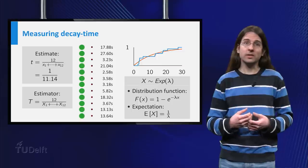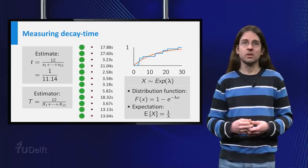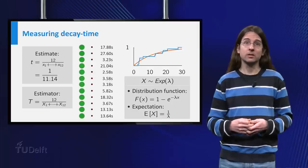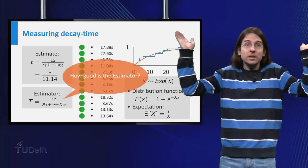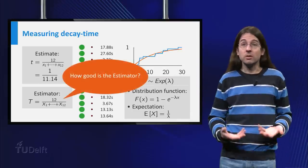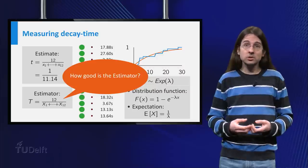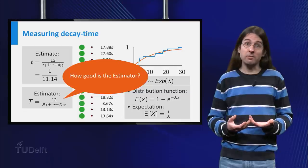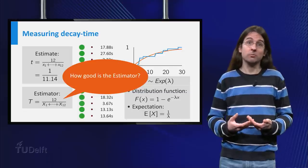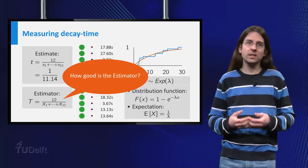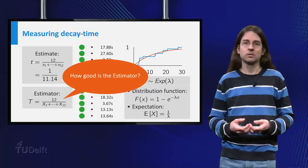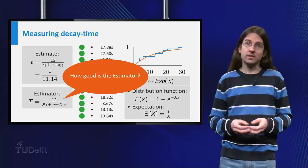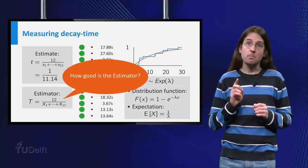Let us go back to the example of the radioactive atoms. One over the average is an estimator for the value of lambda. But is it a good estimator? To answer this question, we first need to know what we mean by a good estimator. As the estimator is random, we cannot hope that the result is always exactly equal to the real value of lambda. The best we can hope of an estimator is that it is close to lambda most of the time.